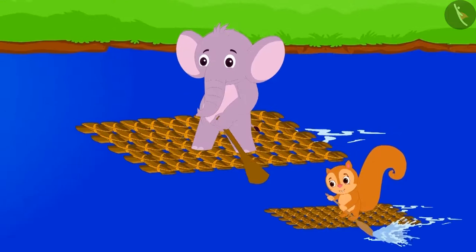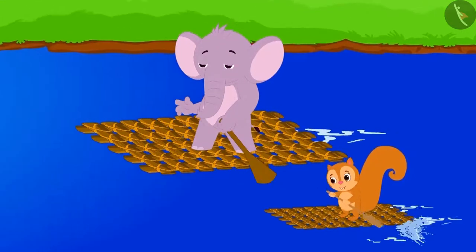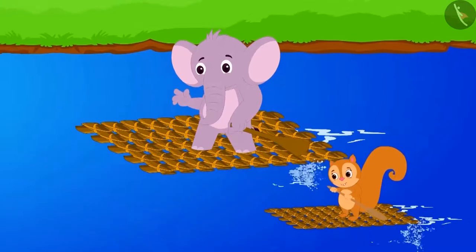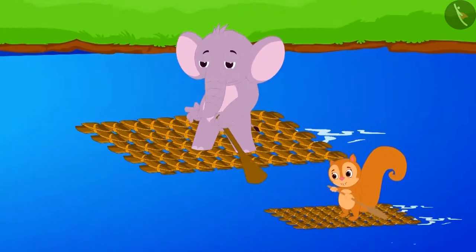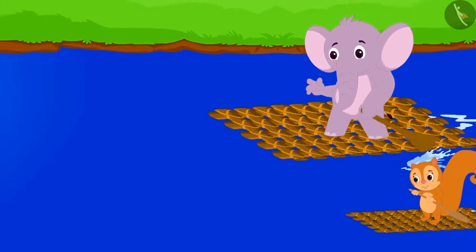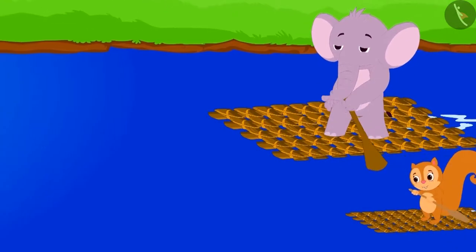Now, Chanda and Appu both sailed their boats on the river and started for their homes humming the table of 10. Come children, let's repeat the table of 10 with them.